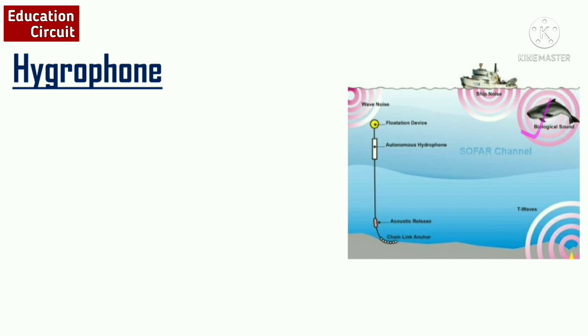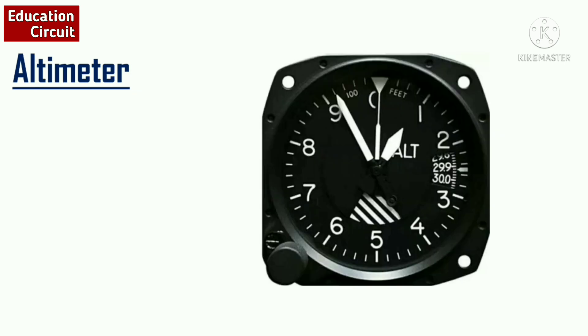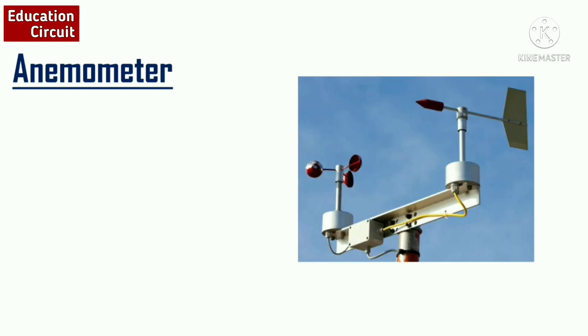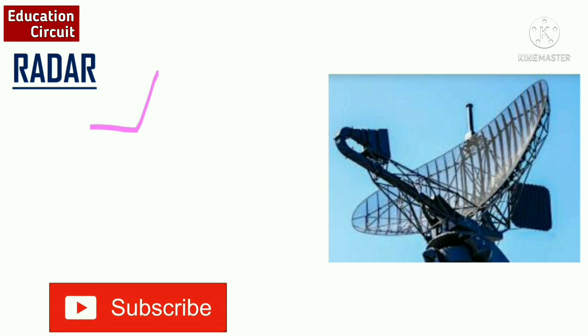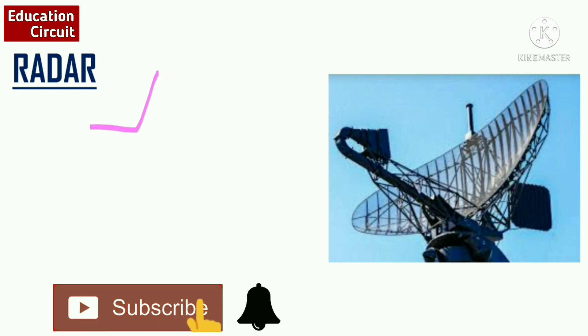Now we will see other instruments used to measure various quantities. First is the altimeter, used to measure altitude — for example, the altitude of an aeroplane or helicopter. Next is the anemometer, used to measure the direction and speed of wind. And radar is used to measure the location, speed, and angle of a moving object. It is widely used in defense forces as part of air defense — by using radar, we can detect the presence of enemy aircraft within our boundary.